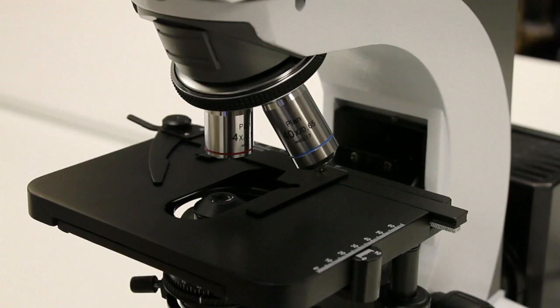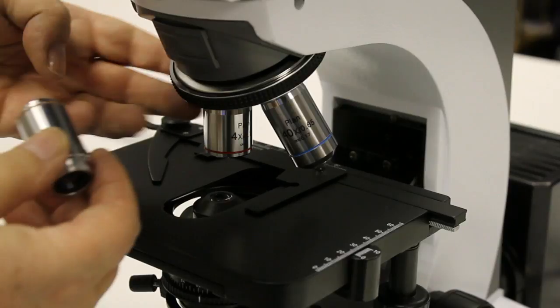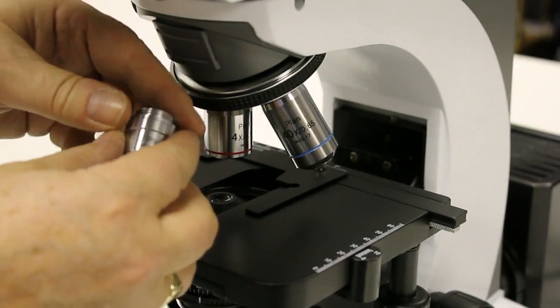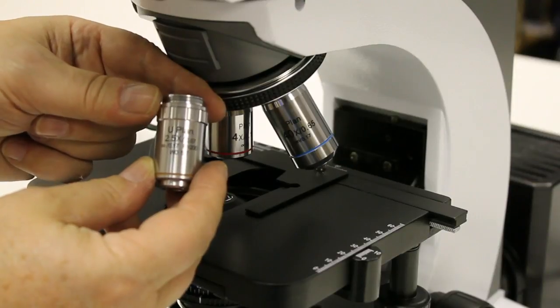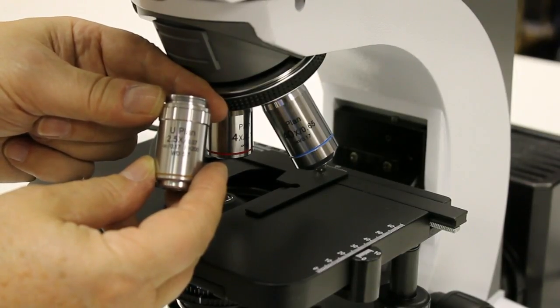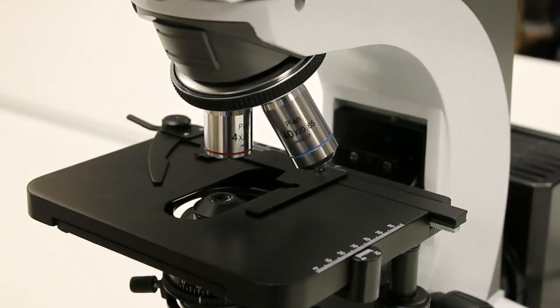Okay, next we have to fit the objectives that you will have received onto the turret of the microscope. If you're going to be using whole blood dried analysis, you will have received a 2.5x objective, and if you're using dark ground,